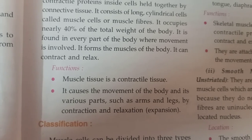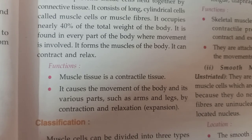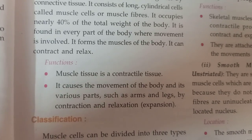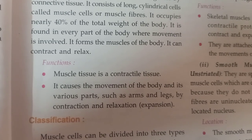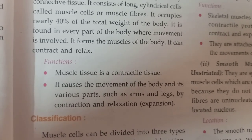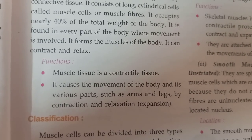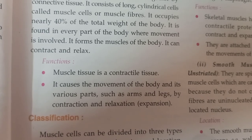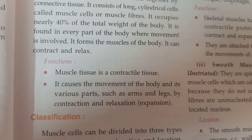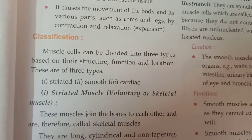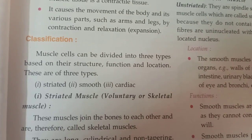The functions of muscular tissue: first, it is a contractile tissue — it can contract as well as relax. Second, it causes movement of the body and its various parts, such as arms and legs, by contraction and relaxation. Muscle cells can be divided into three types based on their structure, function, and location.